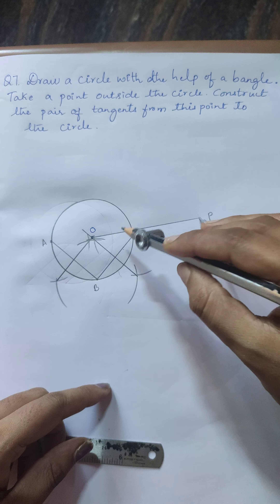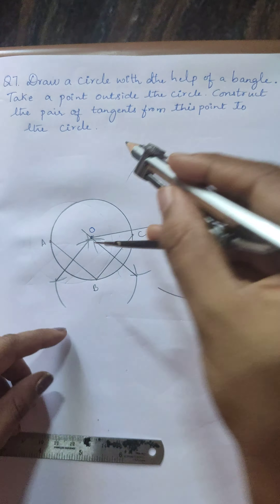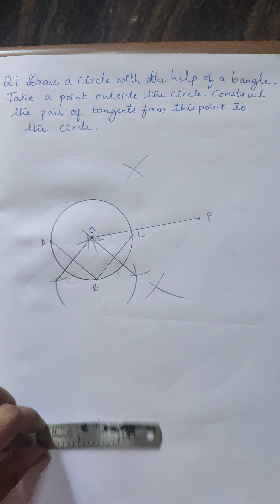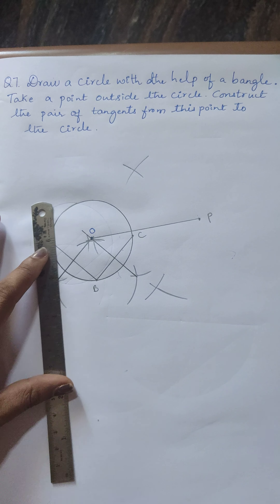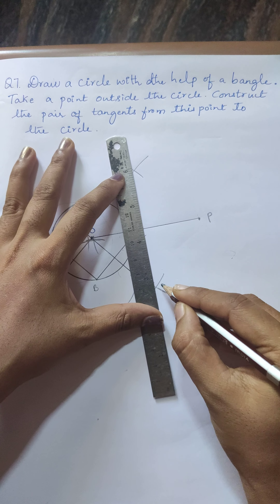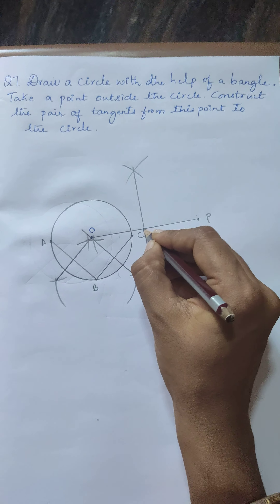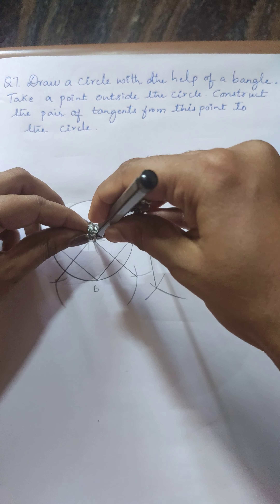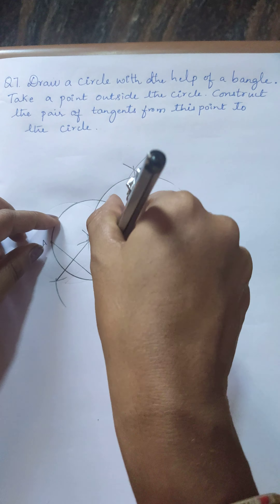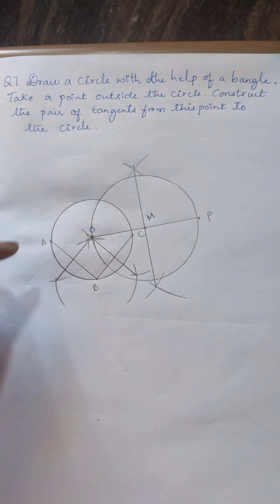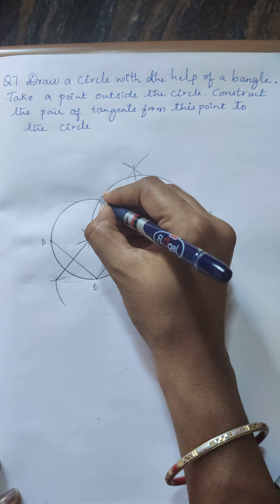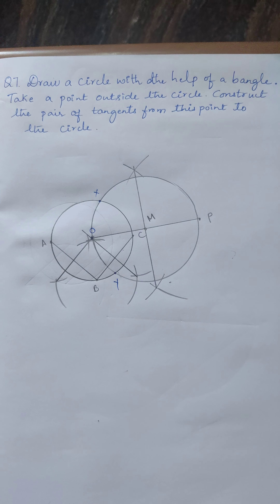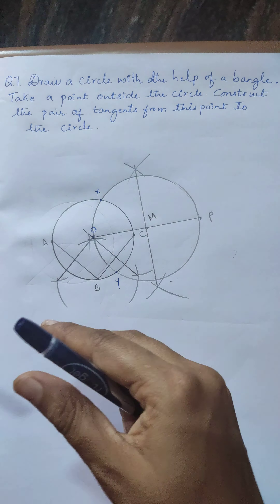For the line OP, draw a perpendicular bisector: take more than half, cut arcs from both ends, join to get the midpoint. Take that midpoint as M. With OM as radius, draw another circle. This new circle intersects the original circle at two points — take them as X and Y. Join PX and PY.